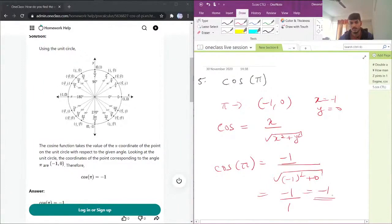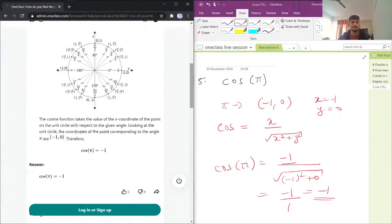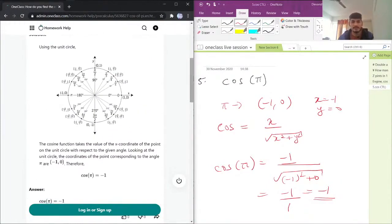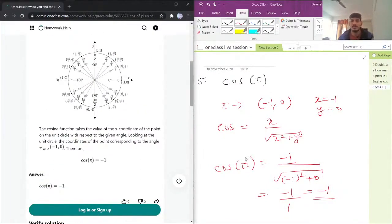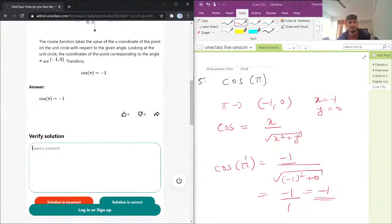1, which equals negative 1. And so with the help of the unit circle, we can find the exact value of any trigonometric ratio for any angle. So here also, the solution is correct. Great job!